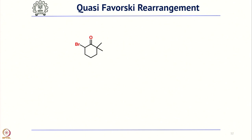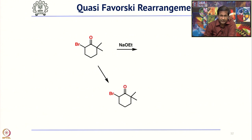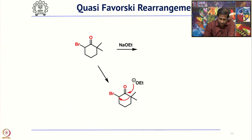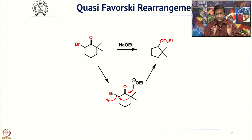We know what Favorskii rearrangement is; we should also know what quasi-Favorskii rearrangement is. Quasi-Favorskii rearrangement is the one where a carbocation is not formed and an enolate is not formed. If you take this alpha-halo ketone and treat with sodium ethoxide, the sodium ethoxide attacks the carbonyl, then this bond migrates and the bromide leaves, giving you directly a five-membered ring ester. In the Cubane synthesis, we will use quasi-Favorskii rearrangement, not classical Favorskii. Quasi-Favorskii is a subset of the broader Favorskii rearrangement.